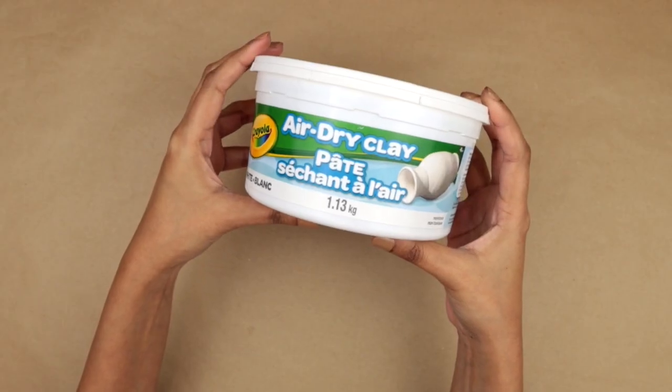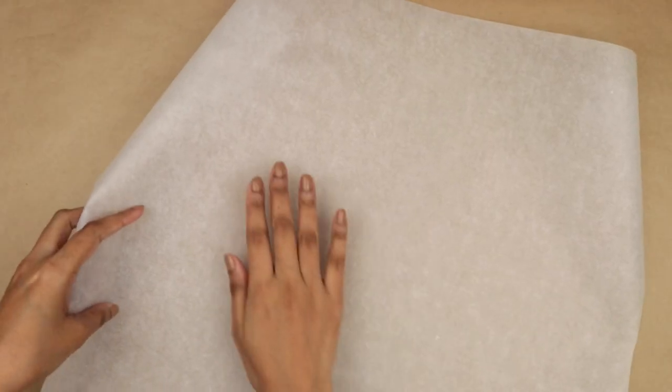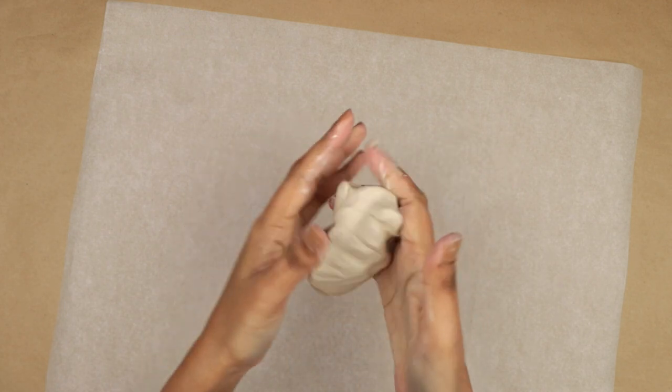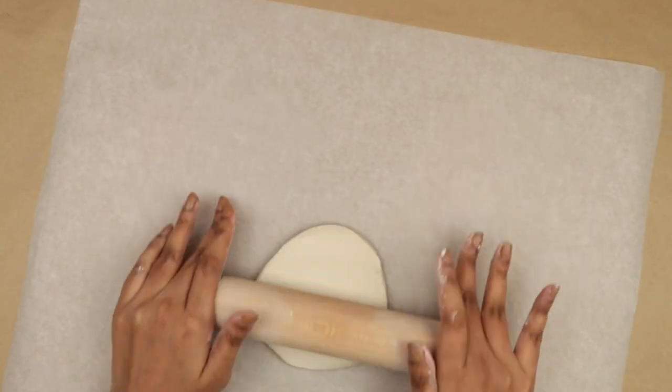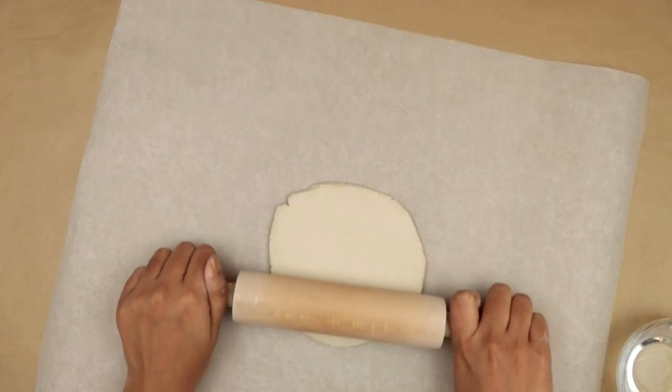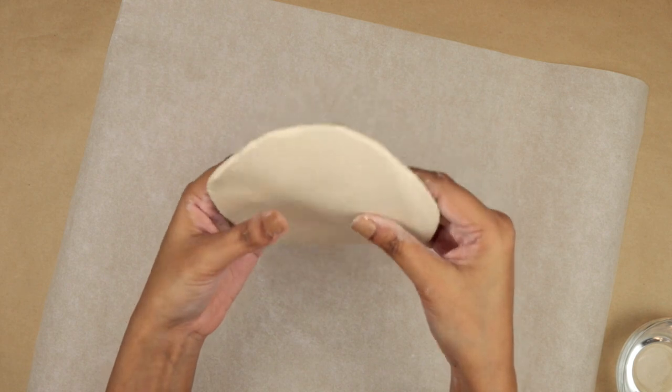I'm going to use this tub of Crayola air dry clay for all the DIYs today. First, I'm laying down some parchment paper and taking a chunk of clay and warming it up in my hands. This makes clay much easier to work with. Then I'm rolling it out with my rolling pin evenly, keeping the same thickness all the way, about a quarter inch thick.